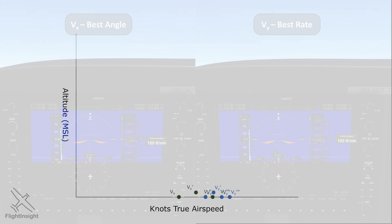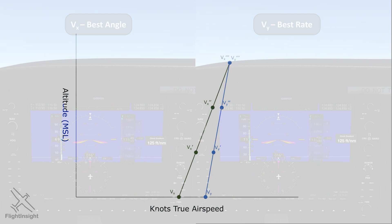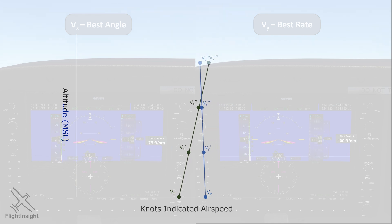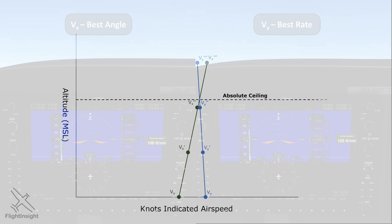So we can plot the changes in VX and VY to show that in terms of true airspeed, they both increase with altitude, although VY increases more slowly. V speeds are given not in true airspeed, though, but in indicated airspeed. An indicated airspeed is lower than true airspeed in thinner air, so the V speed curves bend backwards a bit when given in knots indicated airspeed. And now we see VY actually decreasing, and a point of intersection.